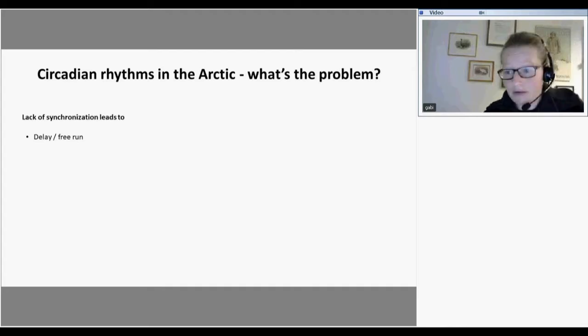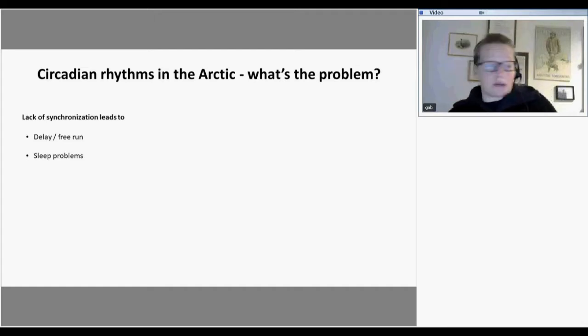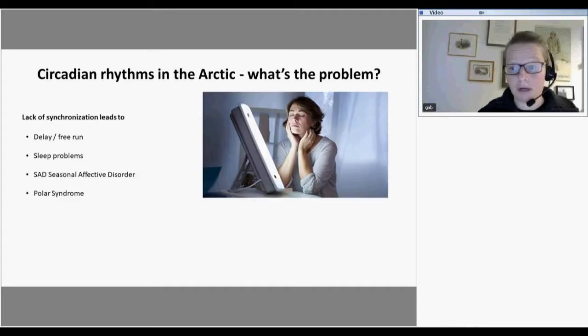First of all, you can get a free run, as we've seen in the hamster experiment, and mostly you can experience a delay. This is what most people experience in the Arctic. That can lead to sleep problems, especially if you're working in the Arctic like me. In Arctic summer, for example, there are 24 hours of daylight, but I still have to be in the office by eight o'clock. So even though my biological clock might be free running, I still have to be awake and functioning at eight o'clock in the morning. Even though my body may tell me after a few weeks this is the middle of the night and actually I want to sleep, I would still have to be in the office at eight o'clock. You can already see that this is very challenging for people working in the Arctic.